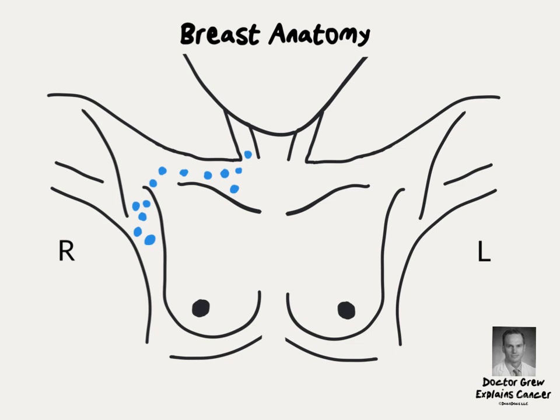Under normal circumstances, fluid in the breast drains to lymph nodes in the armpit and just above the clavicle, also known as the collarbone. If there are cancer cells in the breast, they can also follow this pattern of spread, and this can be important both for surgery as well as for radiation and chemotherapy.